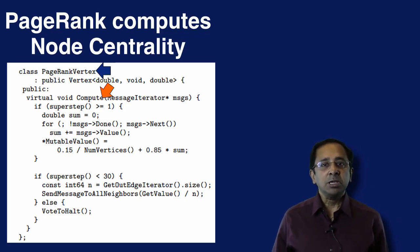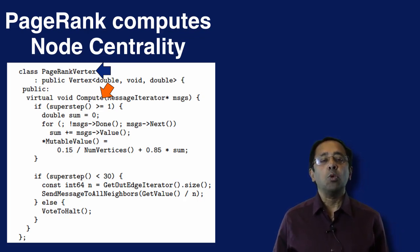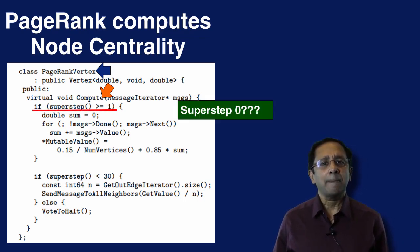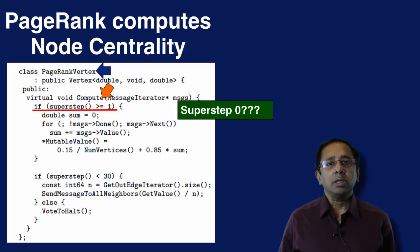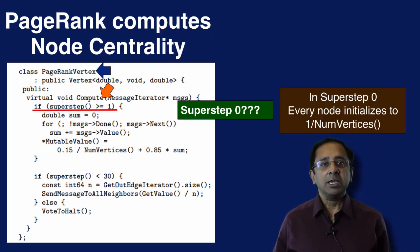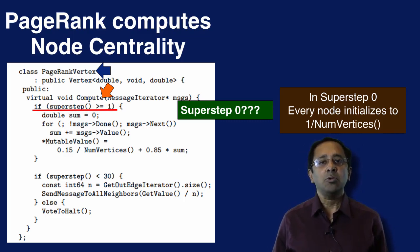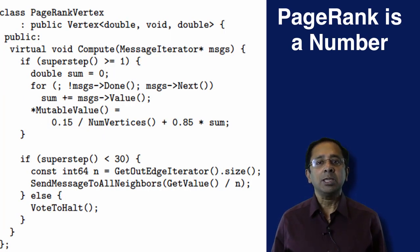The compute method starts by specifying what happens when the super step is 1 or more. But what happens in super step 0? Super step 0 is used for initialization. Every vertex initializes its PageRank value to the same number, which is 1 divided by the total number of vertices in the graph.